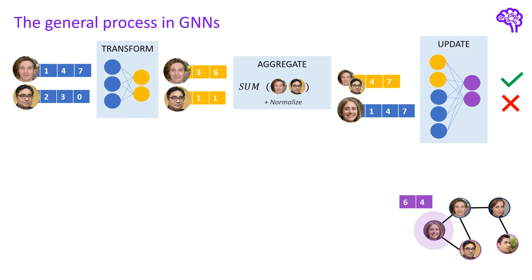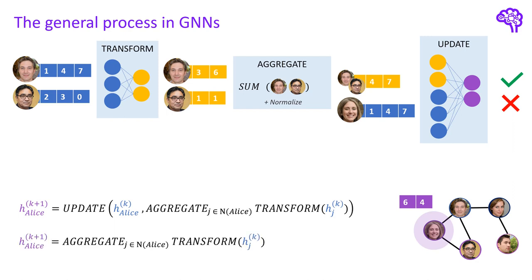We can summarize this procedure in the following formula. Again there exist many different variants, so this might deviate from approach to approach. For instance, we can add self-loops and simplify the formula like this, as Alice herself is now part of her neighborhood. Okay, so now back to the original question. Where is the edge information used in this process?